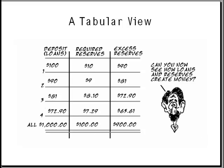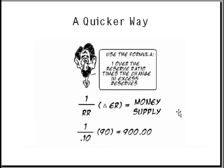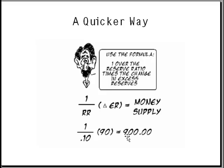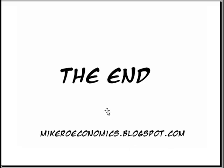There's a really easy formula used in AP Economics to show this: simply one over the reserve ratio, times the change in excess reserves, equals the change in the money supply. In this case, one over 0.1 equals ten, multiplied by ninety dollars — the change in excess reserves — gives nine hundred dollars. This concludes the video on how banks create money.